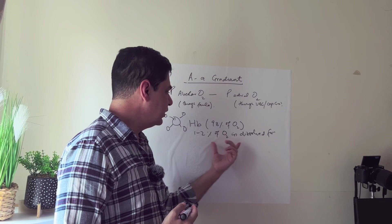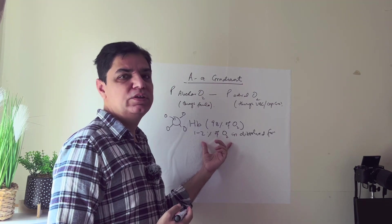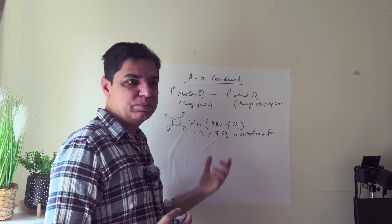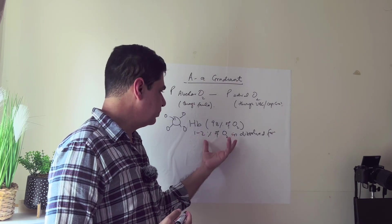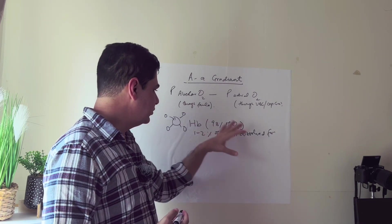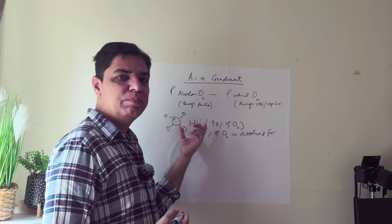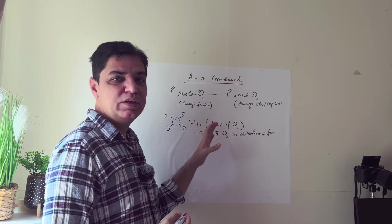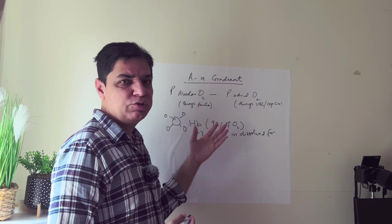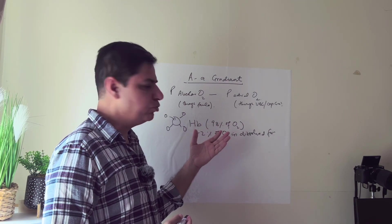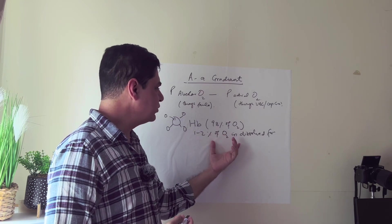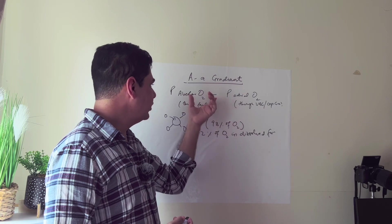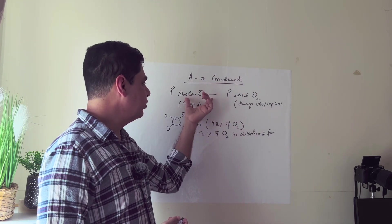As for the oxygen dissolved in blood, it is not easy to calculate — there are various methods but they are cumbersome. So remember: oxygen is carried predominantly bound to hemoglobin, measured by O2 saturations, and 1 to 2% is in dissolved form.